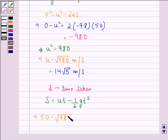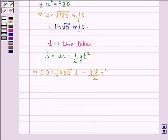This implies 4.9t² - 14√5·t + 50 = 0. t will be equal to -b ± √(b² - 4ac) divided by 2a.